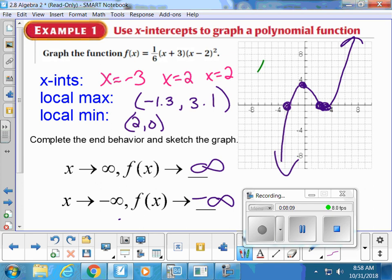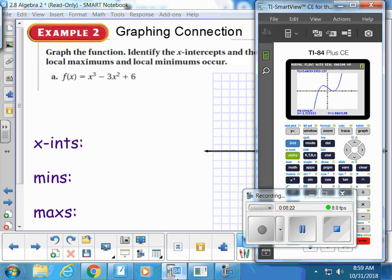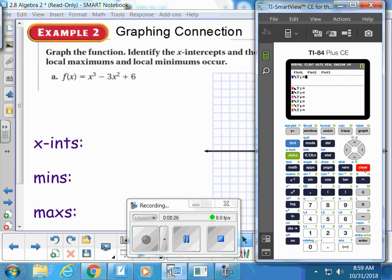You want to try one more? We have time for one more graph. We're going to identify the x-intercepts and the points of minimums and maximums. Get our equation put in, take our old one out. So x to the third minus 3x squared plus 6.